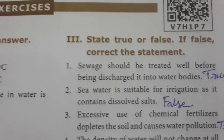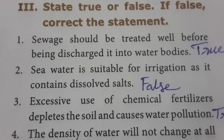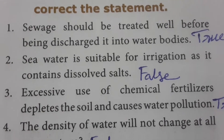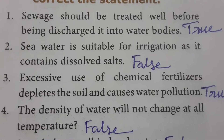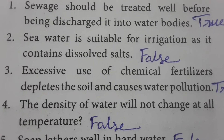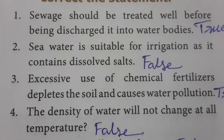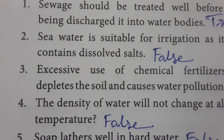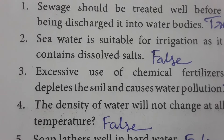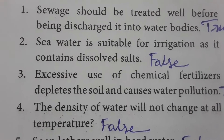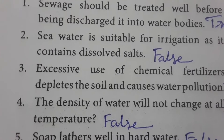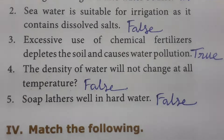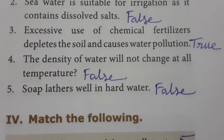True or False: Sewage should be treated well before being discharged into water bodies — True. Sea water is suitable for irrigation as it contains dissolved salts — False, because seawater is highly saline and not useful for plant growth, so it is not suitable for irrigation. Excessive use of chemical fertilizers depletes the soil and causes water pollution — True.